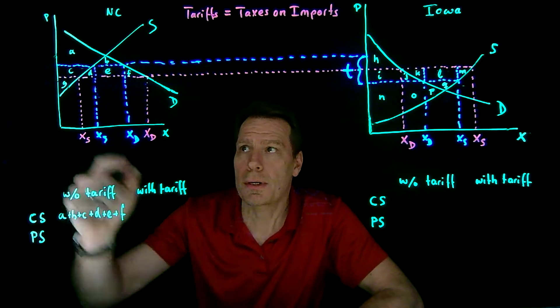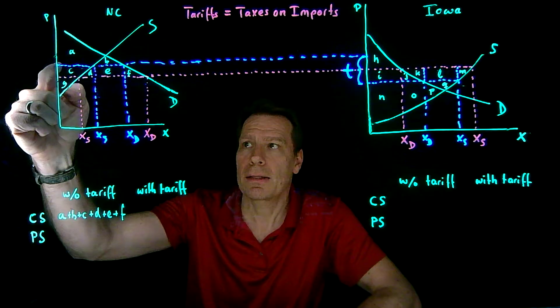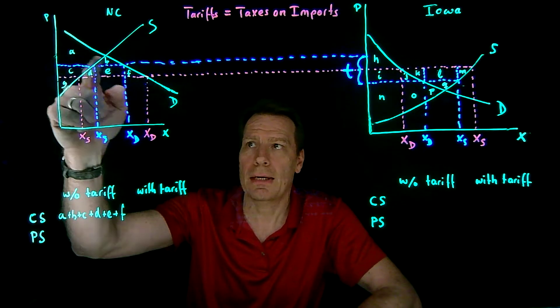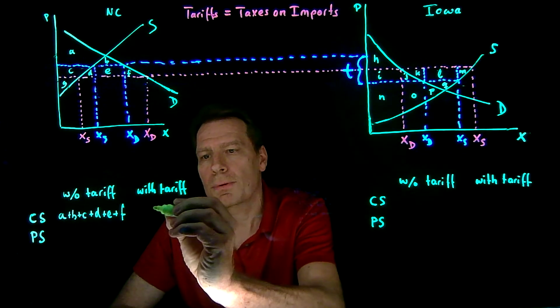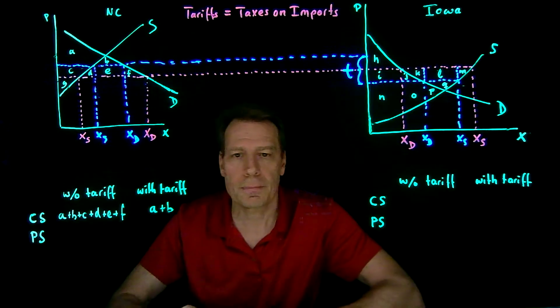When the tariff is imposed, their price goes up, so they buy less at a higher price. They get everything above the blue line up to the demand curve: A plus B. So with the tariff they're left with A plus B. They're worse off.